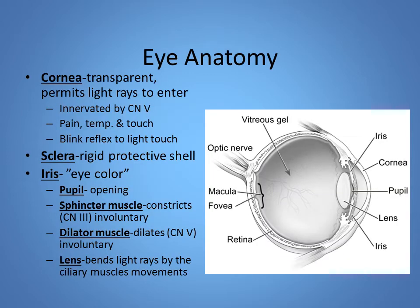Looking at the cornea again: it is transparent and permits light to enter the eye. It is cranial nerve five, the trigeminal nerve, which innervates the sensations of the eye. So when you're putting your contact lens in and you miss and stick yourself in the cornea, that blink reflex and the pain you feel is from cranial nerve five. The sclera is the rigid protective shell of the eye. The iris is the colored part, and within the iris we have the pupil, which contracts and expands using the sphincter muscle from cranial nerve three and the dilator muscle from cranial nerve five.